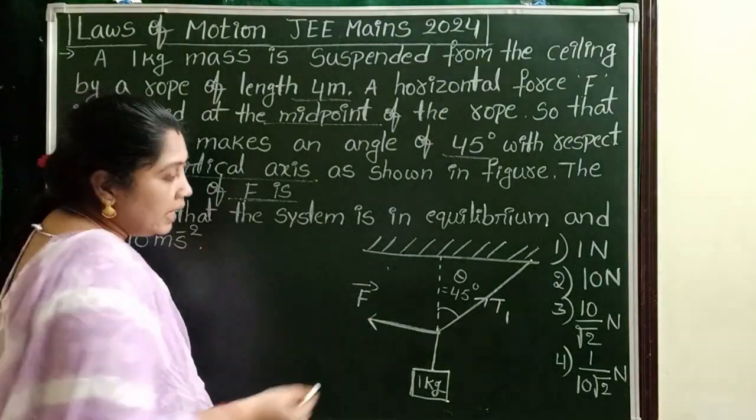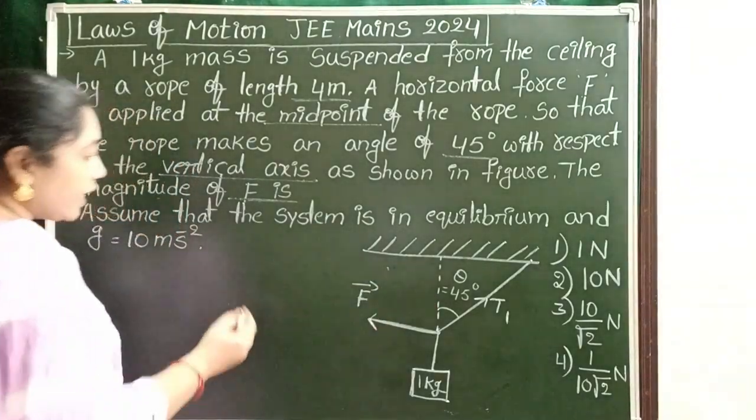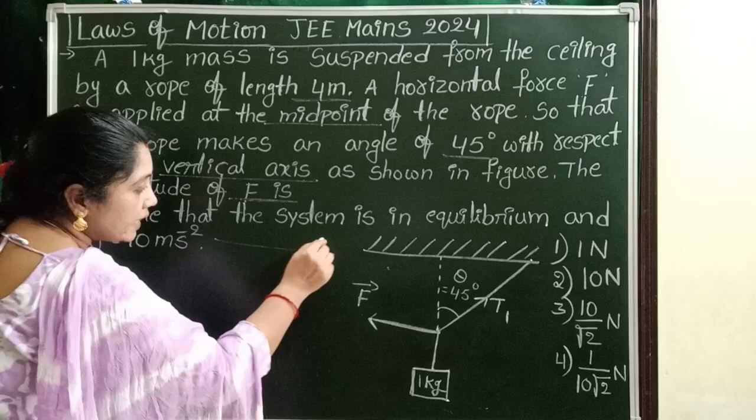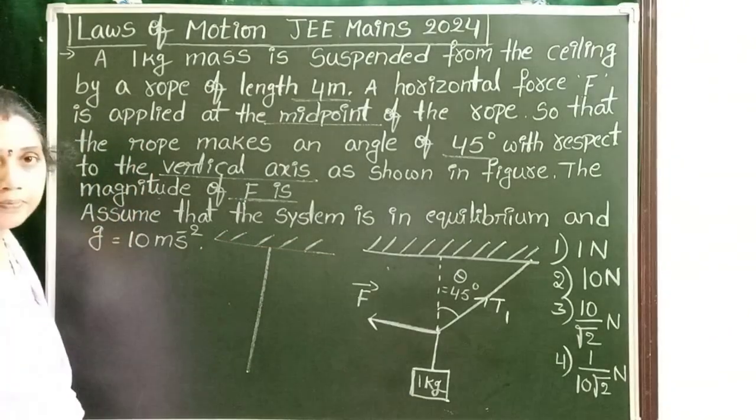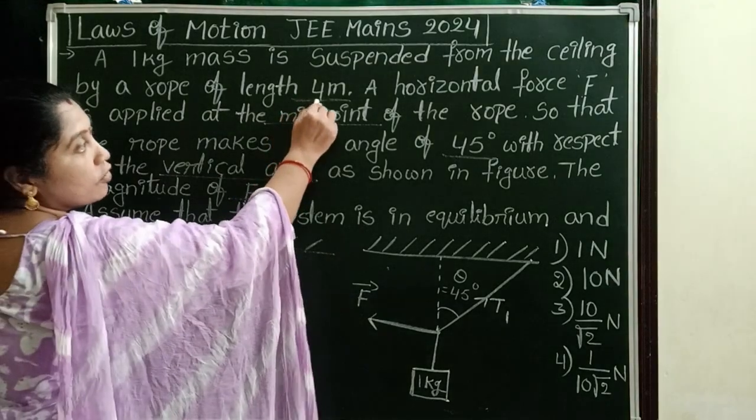This is the diagram. Initially, a rope is attached to a rigid support, that is the ceiling. This is the position of the rope, and the rope length is 4 meters.